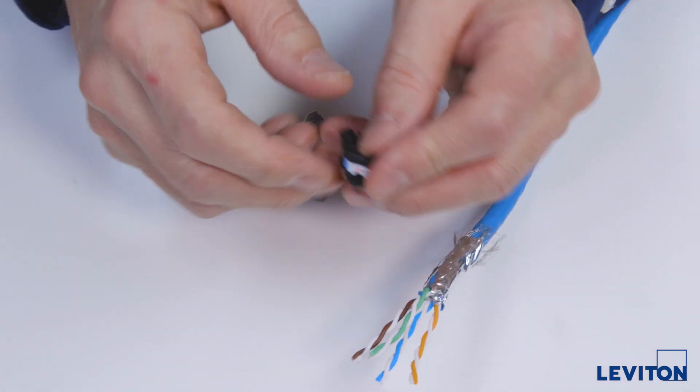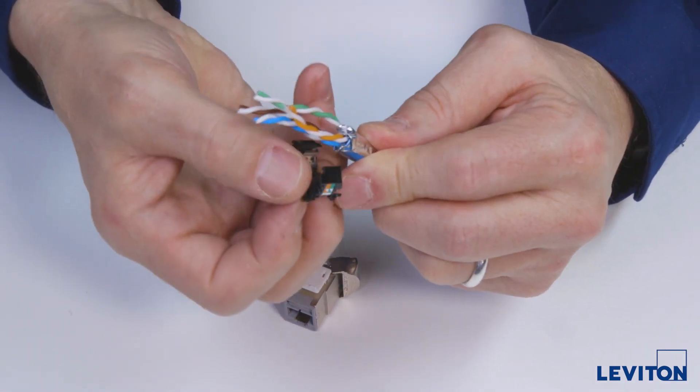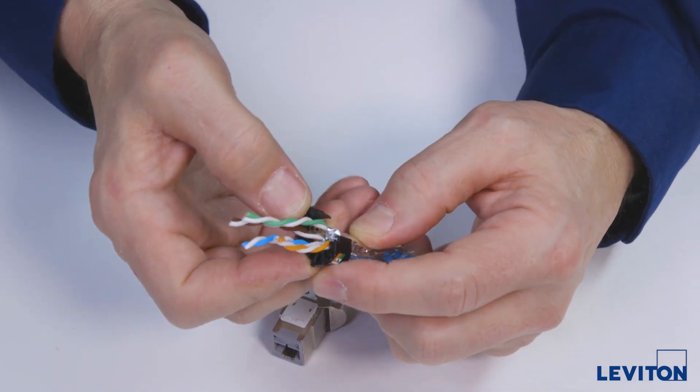We'll start by aligning the blue label on the wire manager with the corresponding blue pair. Slide the wire manager down to a point where the stop post is right at the strip point of the cable.